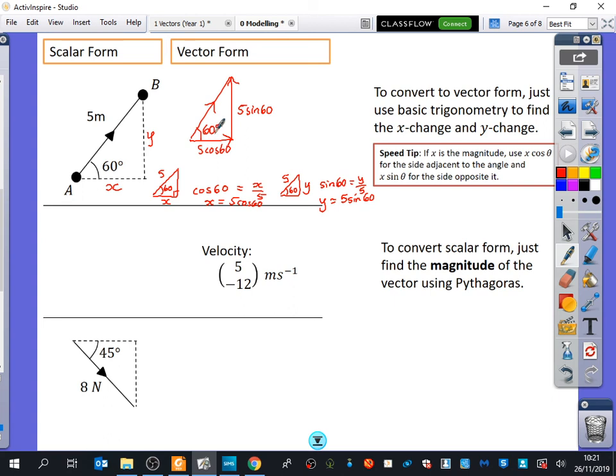Okay. The way that we can tell which one is going to be cos and which one is going to be sine is that the cos one is adjacent to the angle. Why should you be thinking, oh yeah, obviously? Why would you think, oh, obviously cos have to go with the adjacent? Because cos is adjacent. Because the cos is the adjacent over the hypotenuse. And the sine goes opposite the angle because sine is opposite over the hypotenuse. Now, the tip that I've written makes sense. Speed tip. If x is the magnitude, you could use x cos theta for the side adjacent to the angle and x sine theta for the side opposite to it.